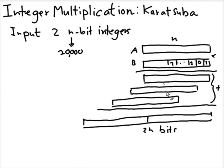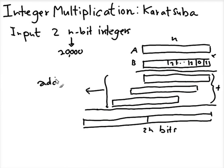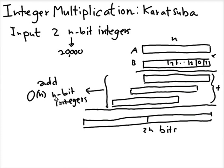Let's think about the running time of this algorithm. You look at all the bits in b, which takes O(n) time. The actual work is the addition step — you add at most n n-bit integers. If you add them in the naive way, for each pair of integers you spend O(n) time, giving you an O(n²) algorithm overall.